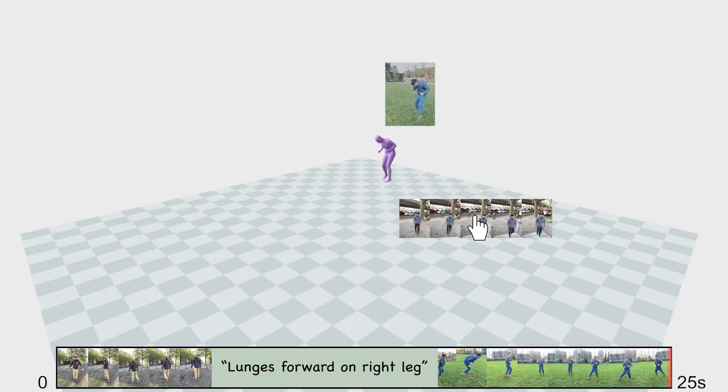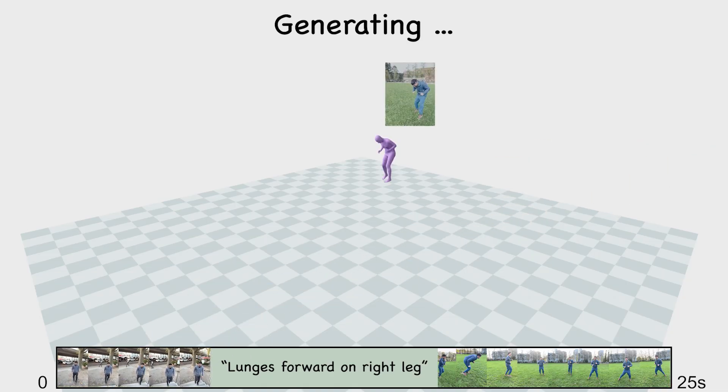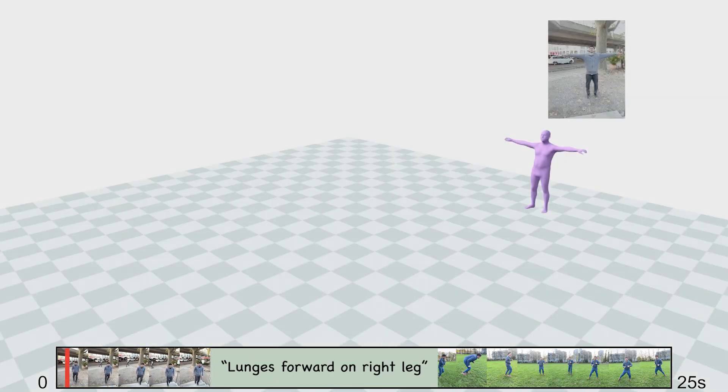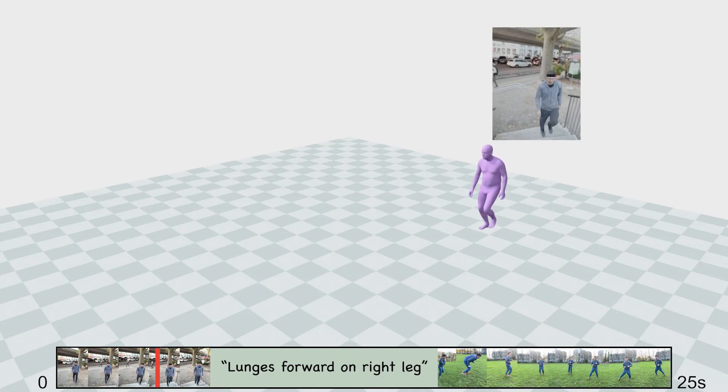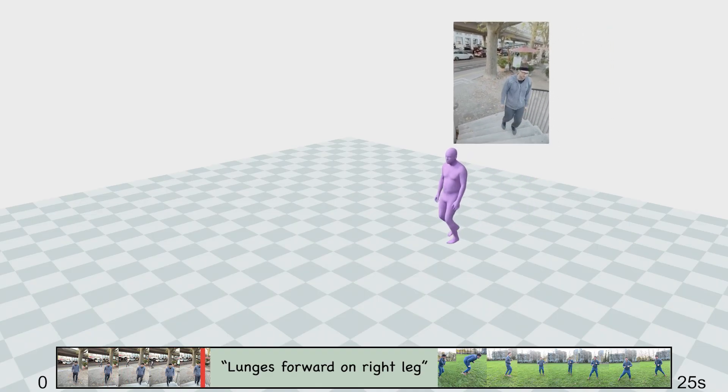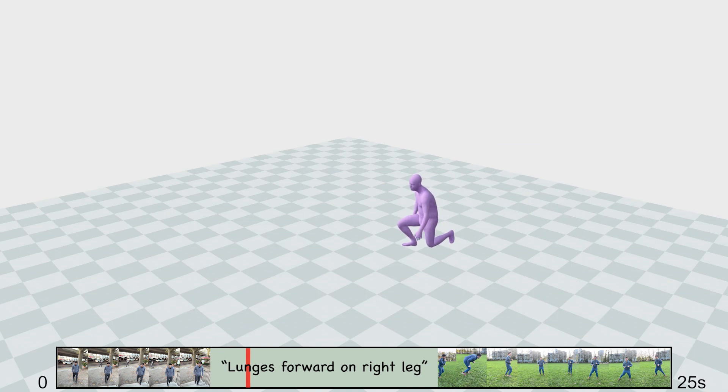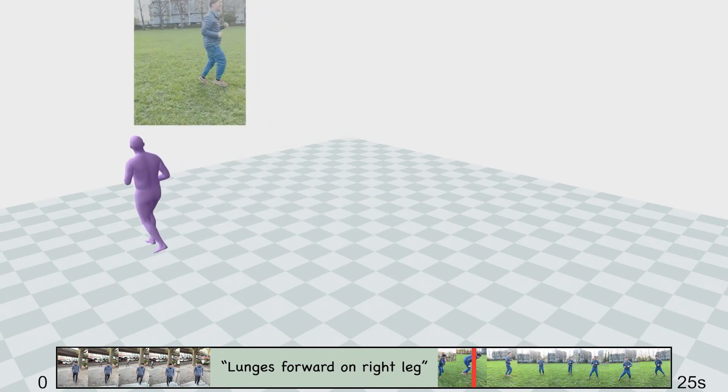We can also modify the video conditions. Notice how the generated motion for the same text prompt differs from the previous example, yet transitions seamlessly across the changing conditions. This demonstrates Genmo's ability to adapt to varying inputs while maintaining diversity and consistency, ensuring that each segment accurately aligns with its respective condition.